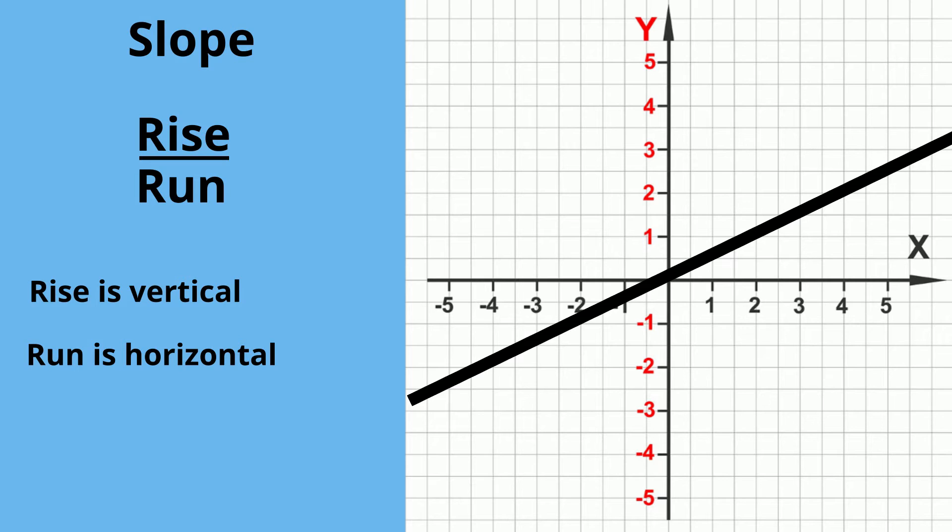Let's take a look at the slope of this line. Let's first find the rise, which is 1, 2, and the run is 1, 2, 3, 4. So the slope is 2 fourths, or 2 over 4.